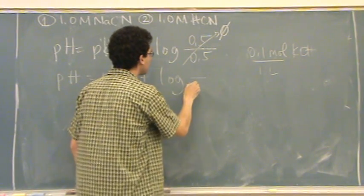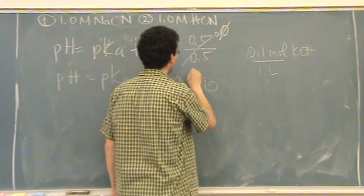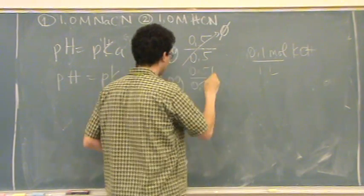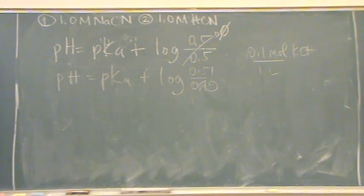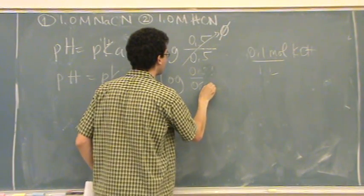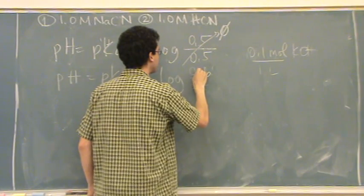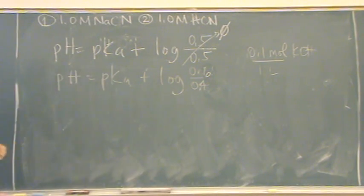So, the acid's going to get a little smaller. The base is going to get a little bigger. It's 0.1. So, this is 0.4, 0.6. Was that too much math at once? Yes. Too much math at once.